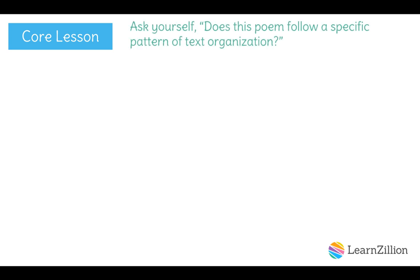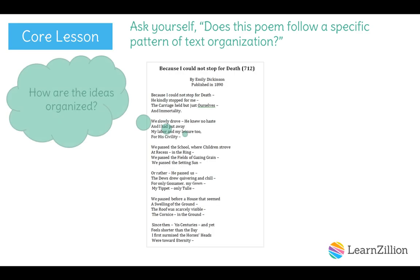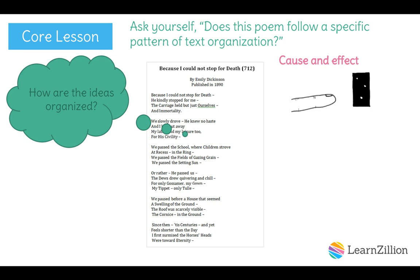Now that we know the poem's poetic form, we need to think about how the text is organized. We need to ask whether this poem follows a specific text organization. Let's look at some specific types and see what matches. Starting with cause and effect: does this poem describe a cause and effect? We know the poem is about death, but we don't clearly see what caused it or a distinct effect from death. It's difficult to tell where life ends and death begins, so this doesn't seem to be cause and effect.